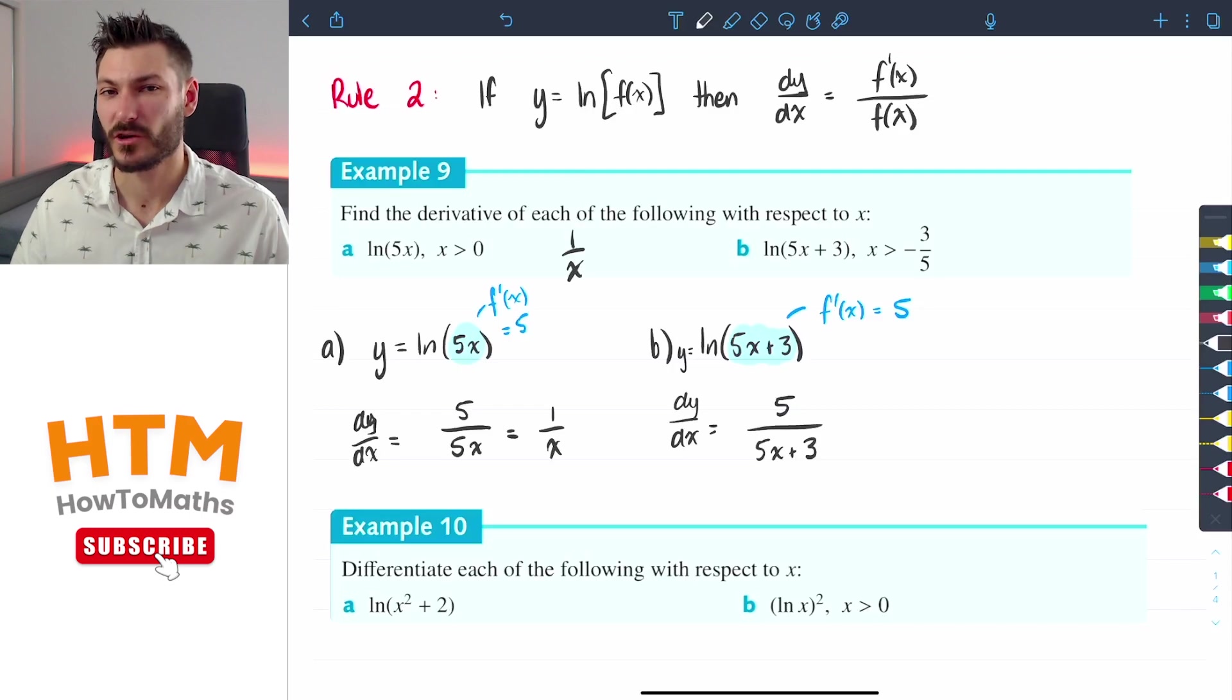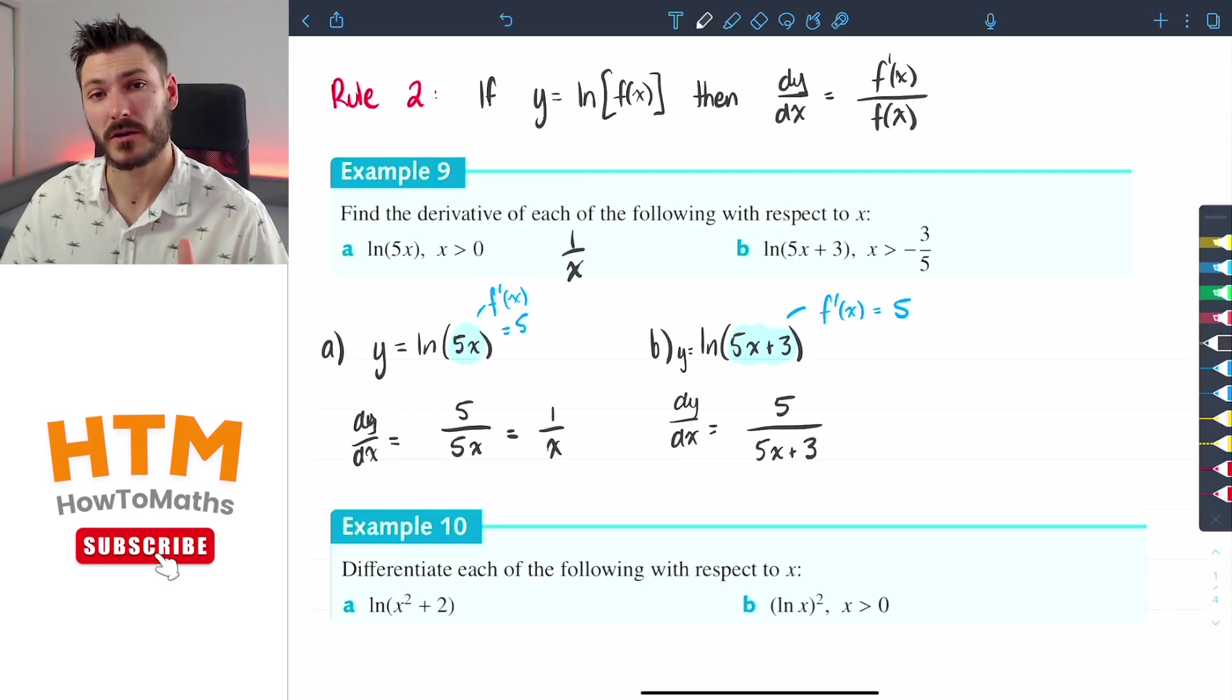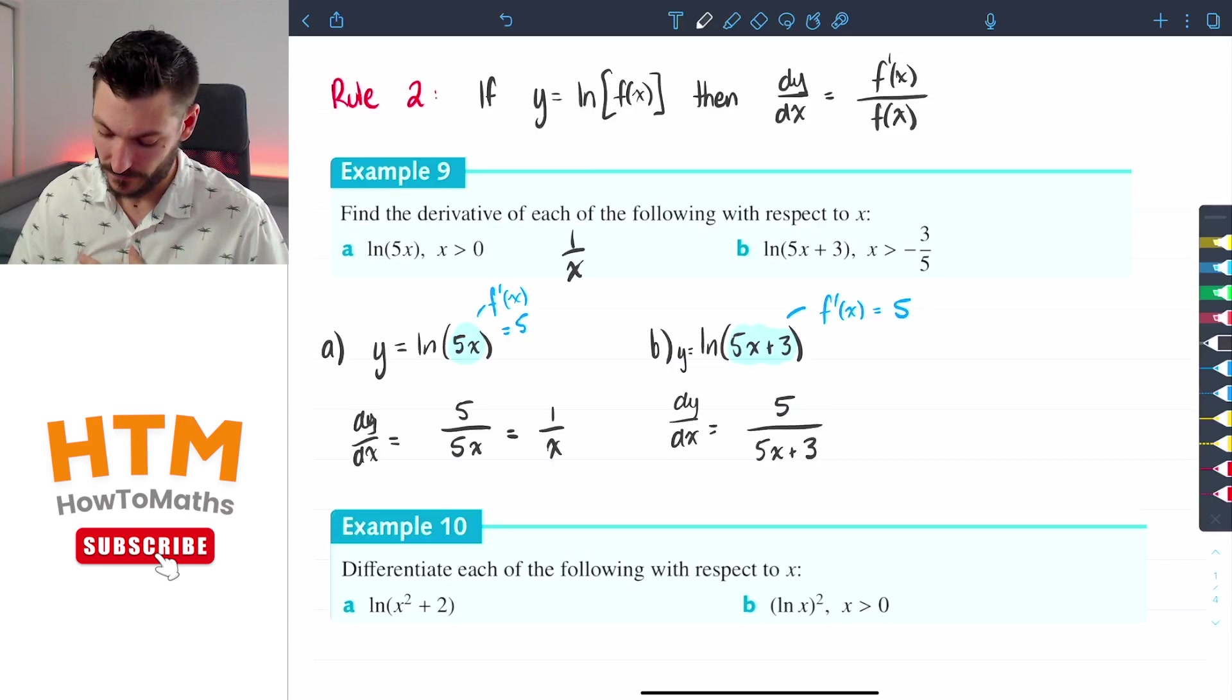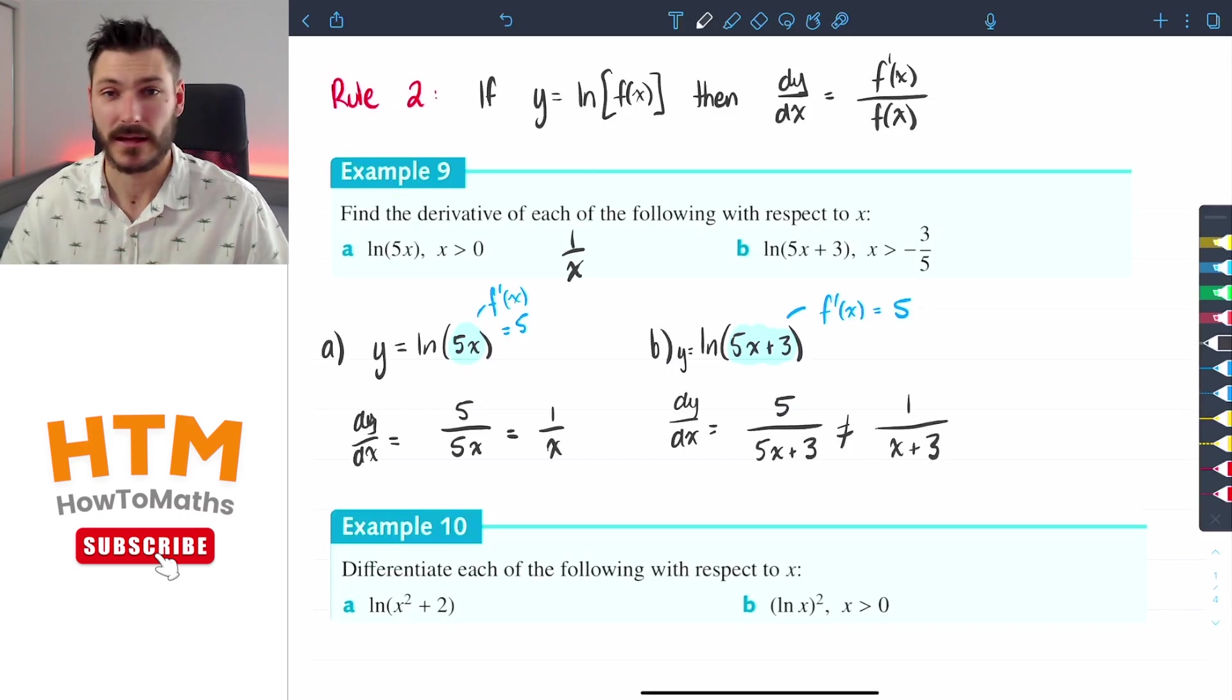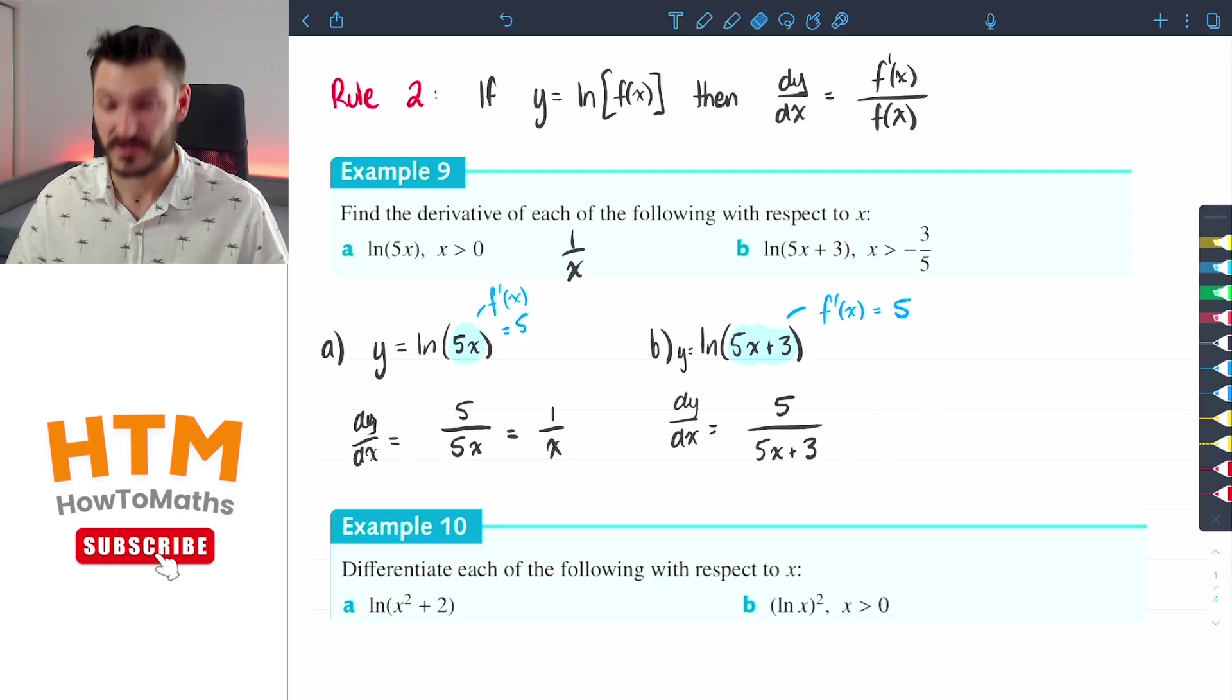So dy/dx is going to equal 5 over 5x plus 3. That's why it's slightly different - that denominator is different. And keep in mind because the denominator is 5x plus 3 and there's addition there, you cannot cancel out these 5s. So you can't say it's 1 over x plus 3. They're not the same thing - you cannot cancel when there's an addition there. So our final answer is 5 over 5x plus 3.